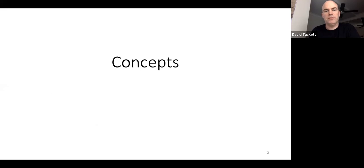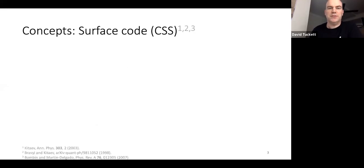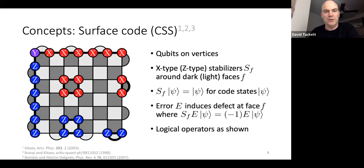The surface code has been introduced several times already in this conference, so I won't go into too much detail. When I refer to a CSS surface code, I mean qubits on the vertices with X-type and Z-type stabilizers. The crucial thing is that if you have an error that anti-commutes with any of those stabilizers, you get a minus-one eigenvalue — we refer to that as a defect on that face.